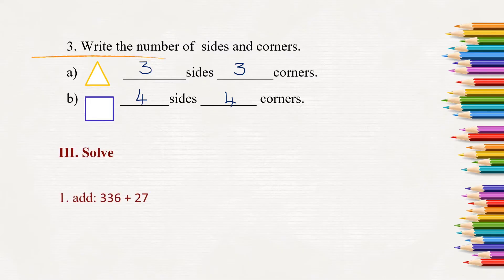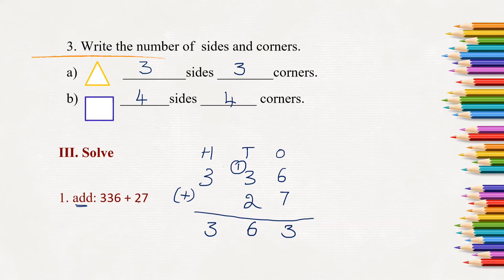Next question: solve. 336 plus 27, we have to add. First, we will write the numbers one below the other according to their place values. Ones, tens, hundreds. 336 plus 27. Don't forget to write the plus sign. 6 plus 7 will be 13. So 3 here and 1 should be regrouped. 3 plus 1 is 4, 4 plus 2 is 6, 3 and nothing is 3 itself. So when you add 336 plus 27, you will get the sum of 363.